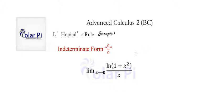And that's this problem here. The limit as x goes to 0 of ln of 1 plus x squared over x. If we try to evaluate the limit, we see that you'd get the natural log of 1 divided by 0. And we all know that the natural log of 1 is 0, so this is 0 over 0.